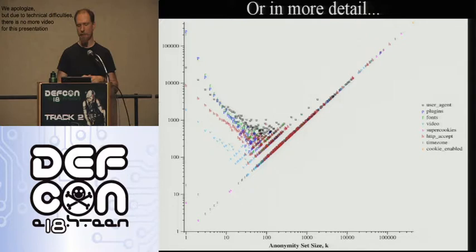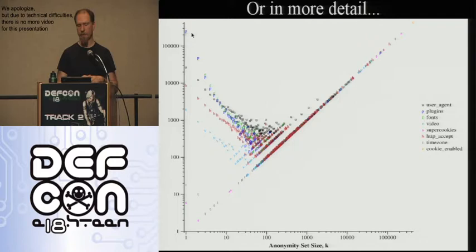It shows, for each of the eight measurements separately, how many people fell into an anonymity set size of K. An anonymity set size of one means you were completely unique because of your plugins or your fonts. There are 200,000 to 250,000 people who are unique just because of the plugins they had installed, 200,000 unique just because of their fonts, and 20,000 to 25,000 unique just because of their user agent.